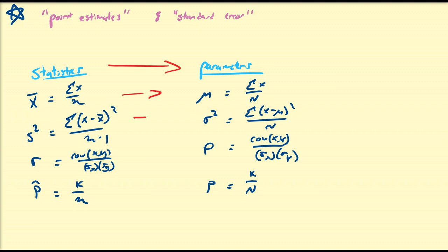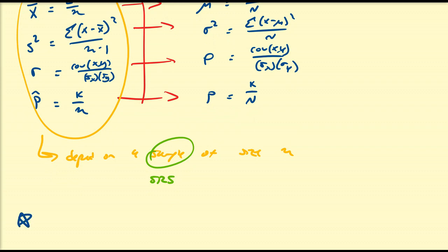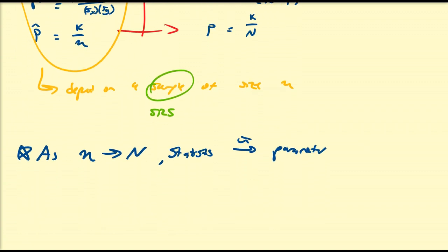Statistics estimate parameters, just as each of these things approximates one another. Each of these statistics depends on one common thing — they all depend on a sample of size n. We'd like the sample to be a simple random sample, unbiased, usually coming from a population that's equally distributed and well-mixed. One important characteristic we hope for is that as our sample size approaches the population size, our statistic values converge to the parameter. So the difference, which I'll call delta — sometimes referred to as the error — will converge to zero.